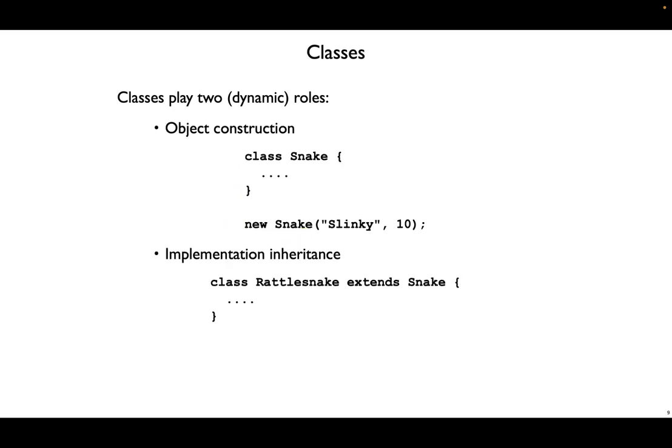And the second role that classes play is to give a way to do implementation inheritance. We'll focus on two new features that we get through it. One is the inheritance of methods, and second is static method dispatch. In particular, we'll use static method dispatch whenever we have a rattlesnake method that calls super to get a snake method.